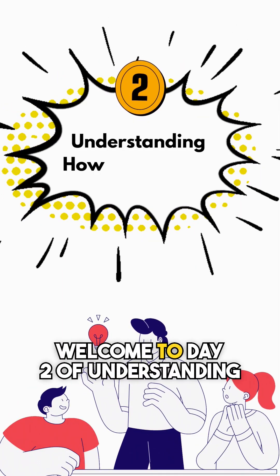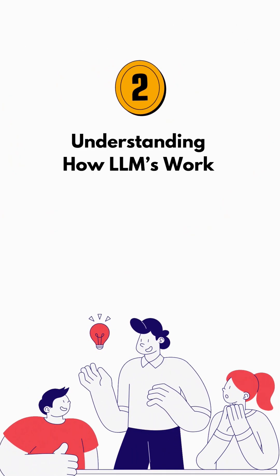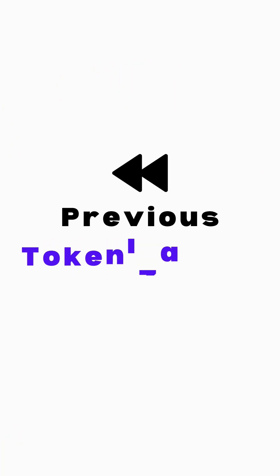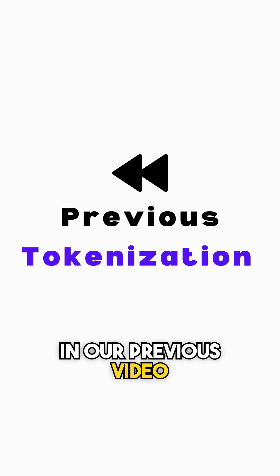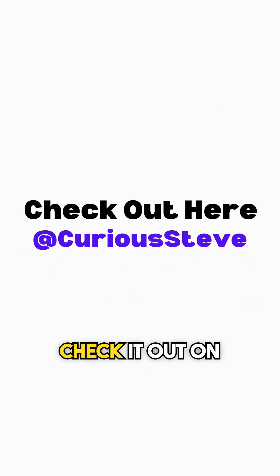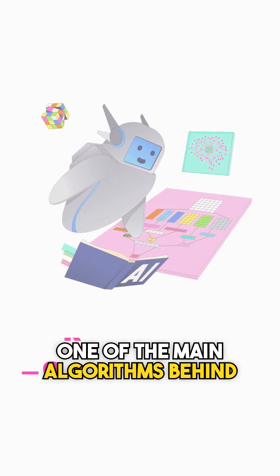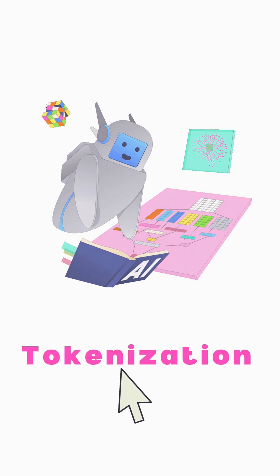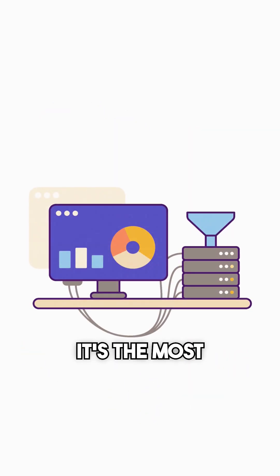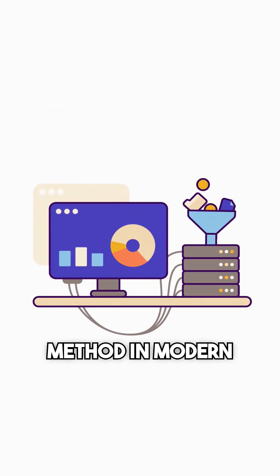Welcome to day 2 of understanding how LLMs work. I already covered tokenization in our previous video — in case you missed it, check it out on my channel. Today we'll explore BytePair Encoding, one of the main algorithms behind tokenization. It's the most commonly used method in modern LLMs.